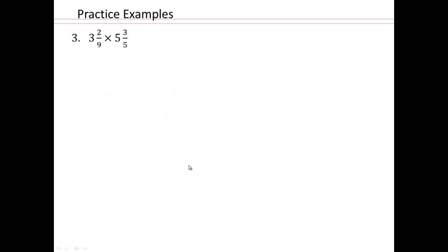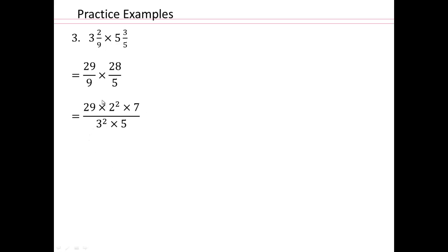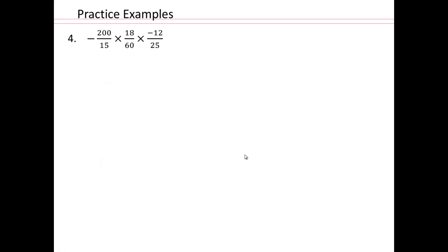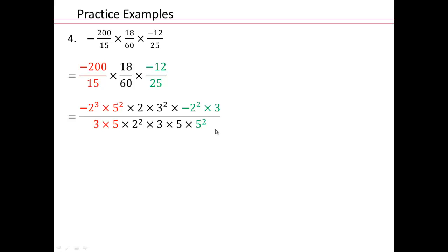Try that one on your own — pause the video please. Remember, if you have mixed fractions, change them into improper fractions first. Then factor them out and multiply. Check whether any factors cancel out. It doesn't matter whether you have two fractions, three fractions, or more — if you're multiplying them, multiply all the numerators and all the denominators. Then write it in factored form so you can divide out like terms.